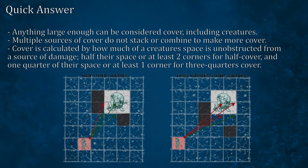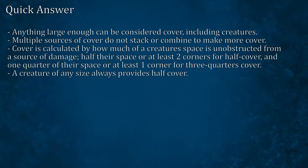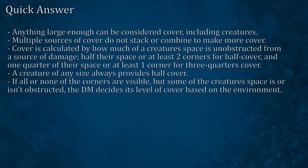Cover is calculated by how much of a creature's space is unobstructed from a source of damage — half their space, or at least two corners, for half cover, and one quarter of their space, or at least one corner, for three quarters cover. A creature of any size always provides half cover. If none or all corners of a creature's space are visible, but some of the creature's space is or isn't obstructed, the DM decides its level of cover based on the environment.